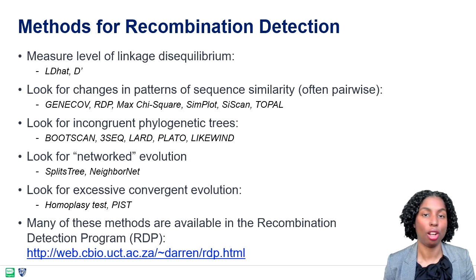Fortunately, there are several algorithms that facilitate these kinds of analyses. Here we can see some examples of different algorithms for detecting recombination, such as SimPlot, BootScan, or 3SEQ. The recombination detection program by Darren Martin et al. offers a great package that includes many of these.